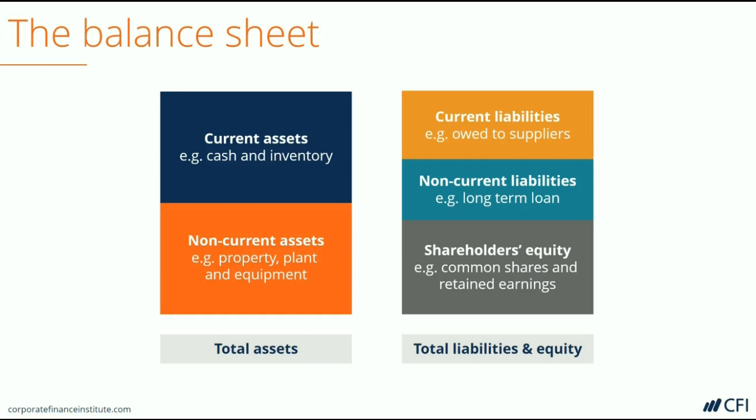Then, over time, the balance can go up or down as the company either earns profit or records losses. If the company produces a profit, that net income flows into shareholders' equity as retained earnings. Those earnings can be retained and remain on the balance sheet, or they can be paid out in the form of dividends, which reduces retained earnings.